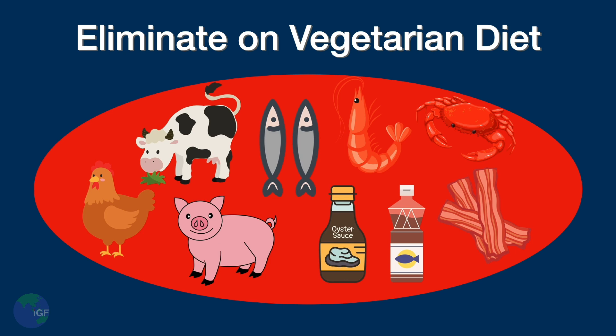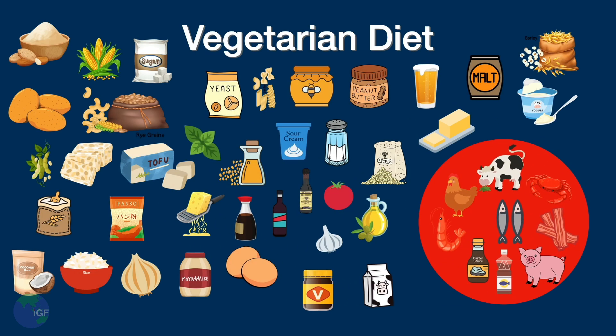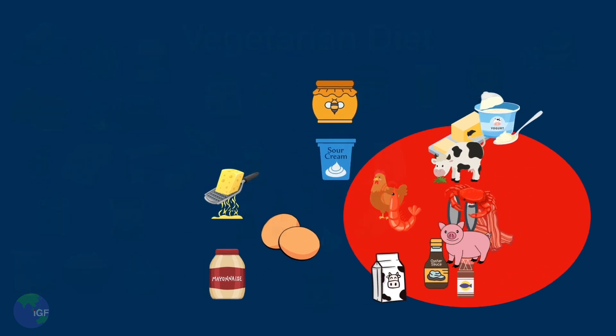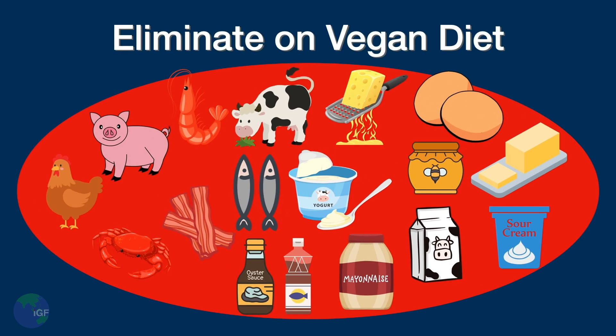The vegetarian diet can have dairy and eggs. Vegetarians also eat grains, vegetables, and lots of other ingredients. A vegan diet takes the vegetarian diet one step further — it eliminates all meat and also any food that comes from an animal.